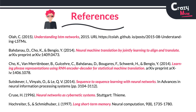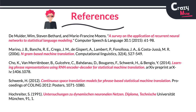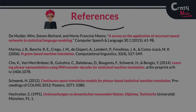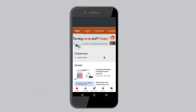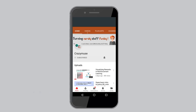That was a summary of research papers related to neural machine translation. Please share it with friends and research buddies interested in statistical machine translation. Subscribe to the channel and press the bell icon to never miss an update.